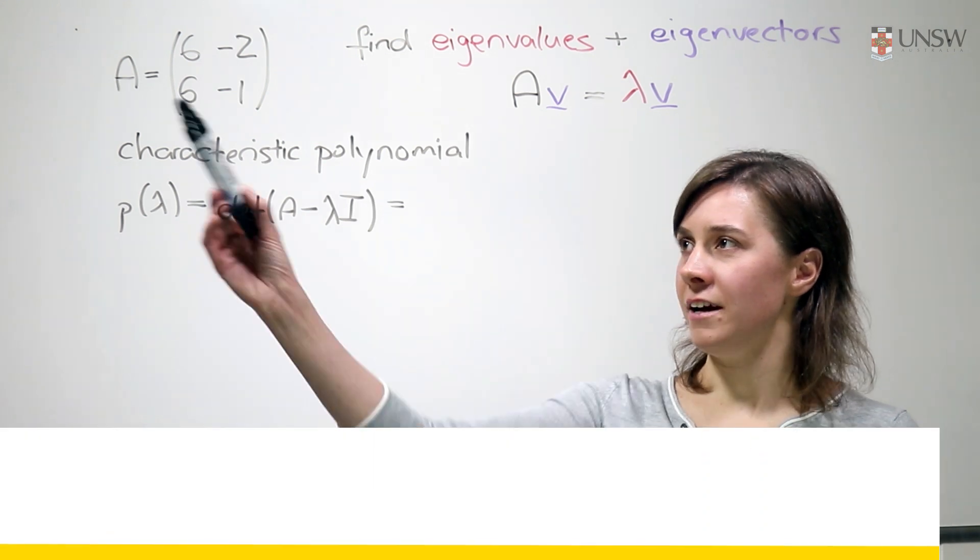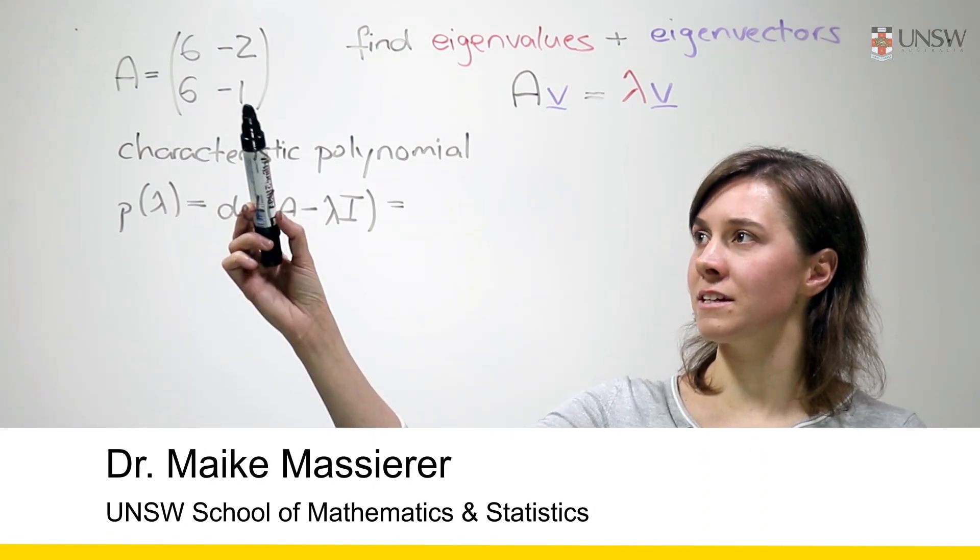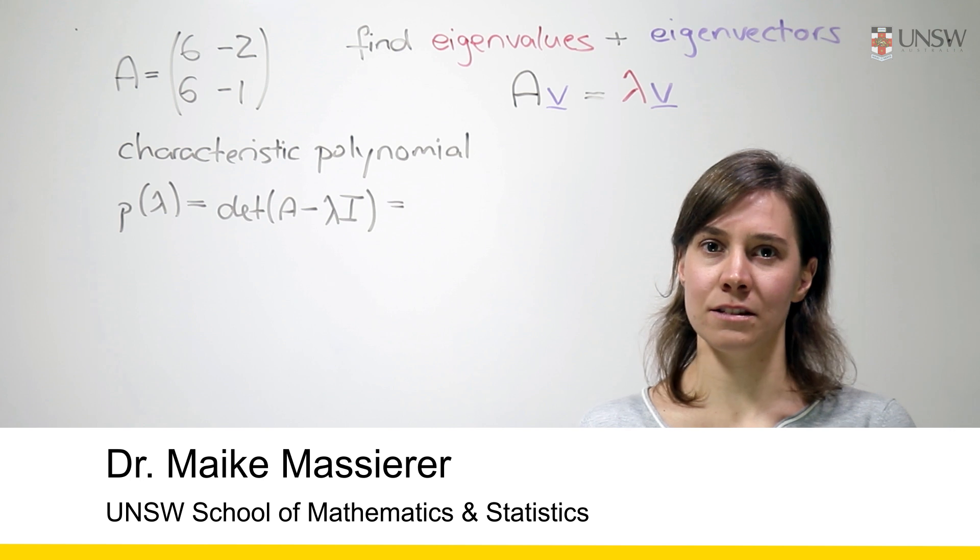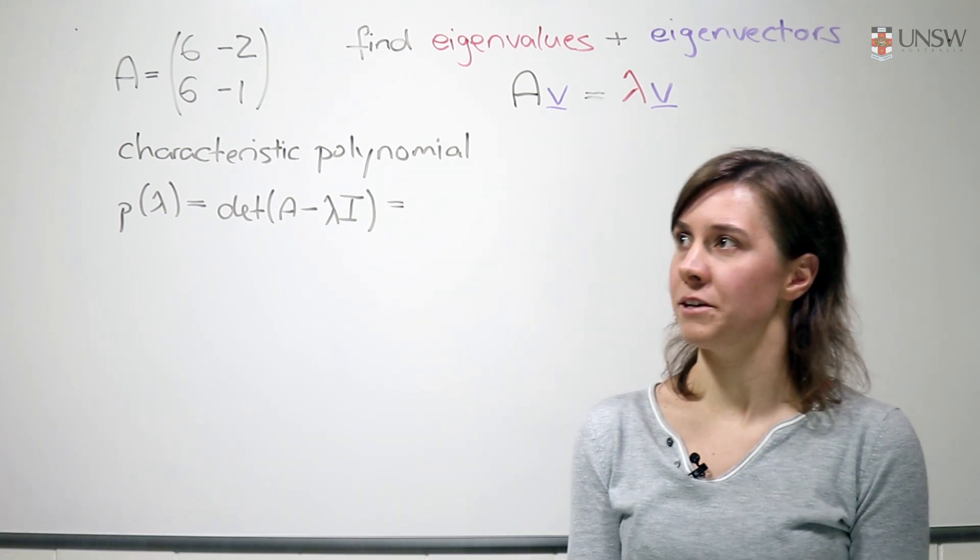In this problem we're given the matrix A, 6 minus 2, 6 and minus 1, and we're asked to find the eigenvalues and the eigenvectors of that matrix.